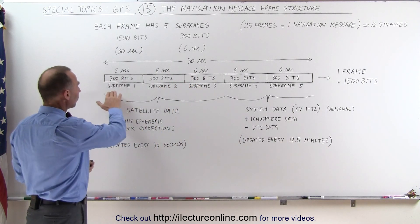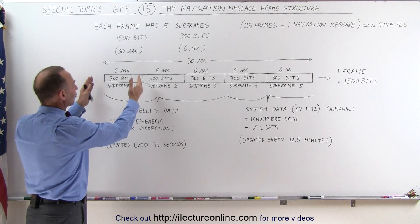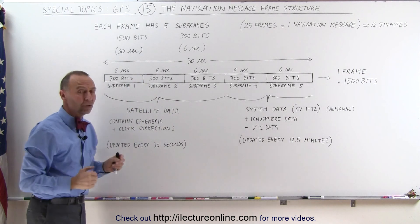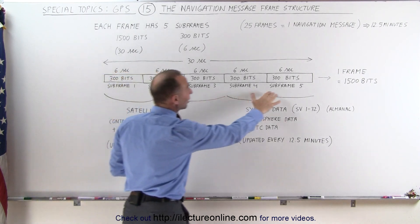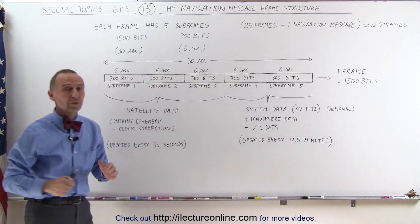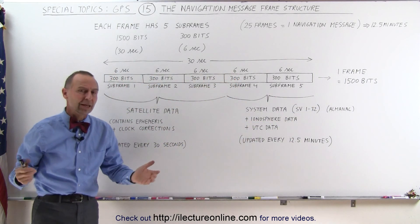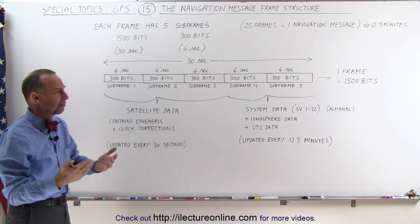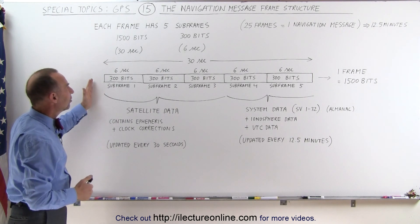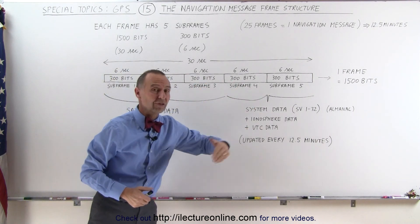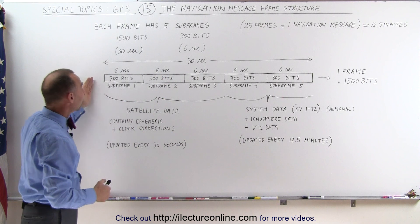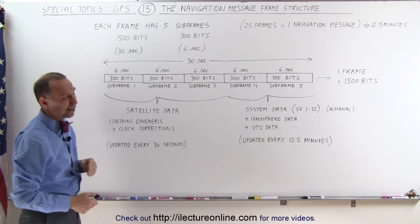Each subframe has 300 bits contained within it, so we have five subframes adding up to a total of 1500 bits that belongs to a single frame. There are 25 frames for the complete message. Since it takes 30 seconds to transmit a single frame, each subframe then takes about six seconds.